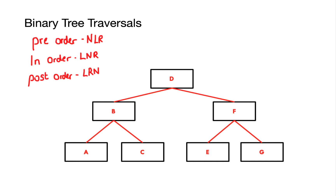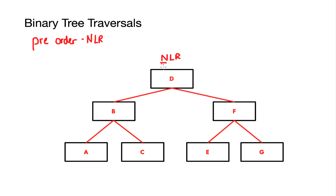In a pre-order traversal we first take the node we're looking at and write that down, then we traverse the left subtree, and after finishing the left subtree we traverse the right subtree.